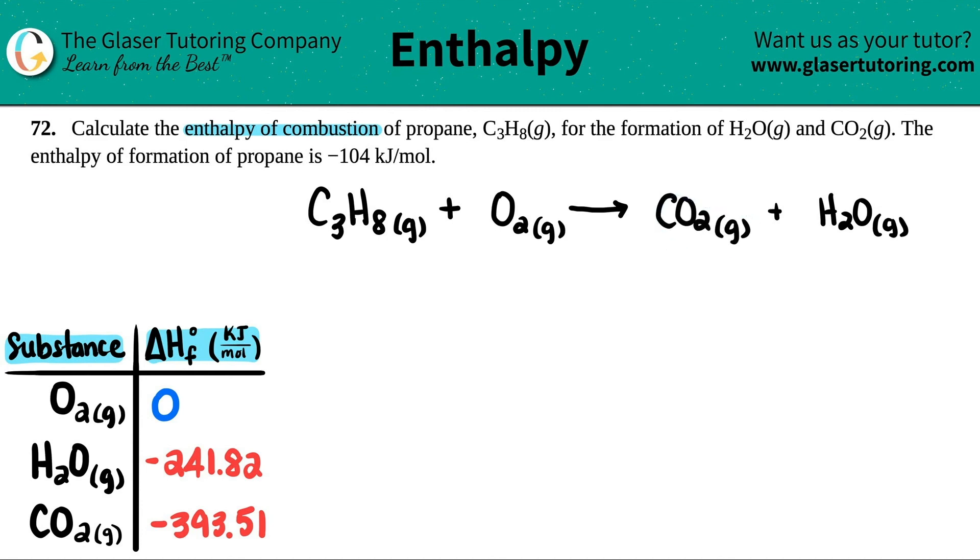Now before we even work with the numbers, we just have to make sure that this is balanced. So I'm going to just quickly balance it. You can pause the video to see if your balanced equation comes up as my balanced equation. I see that I have three carbons, so I'm going to put a three in front of here. I have eight hydrogens, so I'm going to put a four in front of here because four times two is eight. And then I have a total of six oxygens here and a total of four oxygens here. That's a total of 10. So I need to put a five in front of here. Thank goodness there are no fractions. And now we have a balanced equation.